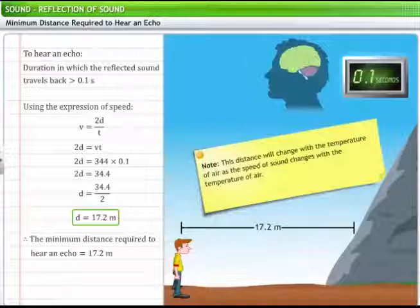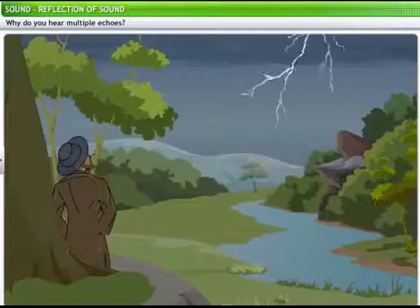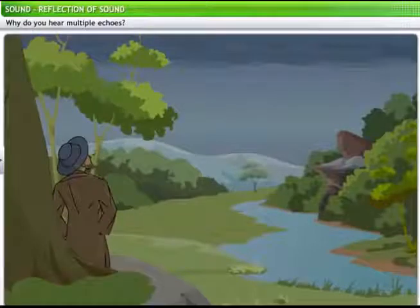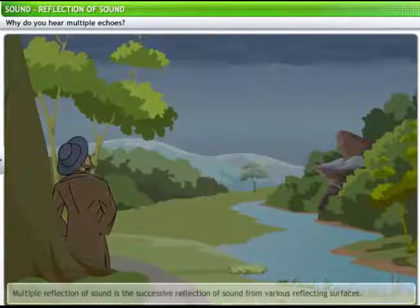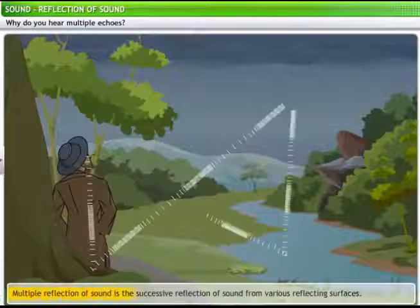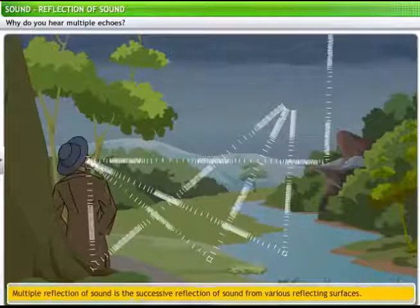Note, this distance will change with the temperature of air as the speed of sound changes with the temperature of air. When you hear thunder rolling, the sound continues for some time. The rolling of thunder is due to the successive reflections of sound from a number of reflecting surfaces, such as the clouds and land. This is called multiple reflection of sound. Thus, multiple reflection of sound is the successive reflection of sound from various reflecting surfaces. We find many useful applications of multiple reflections of sound in our daily life.